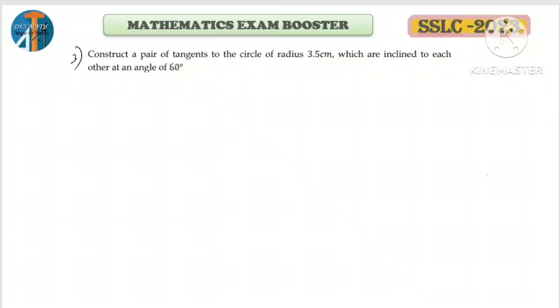Third question: Construct a pair of tangents to a circle of radius 3.5 cm which are inclined to each other at an angle of 80 degrees. The angle between tangents is 80 degrees, but in our construction we measure the angle between radii. As we discussed in the circle lesson, angle between tangents and angle between radii are supplementary - they add to 180 degrees. So 180 minus 80 equals 100 degrees.